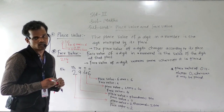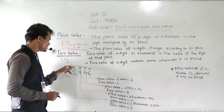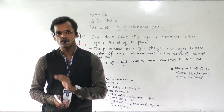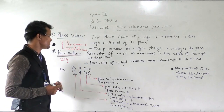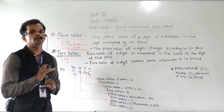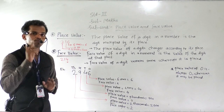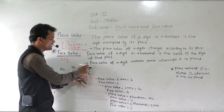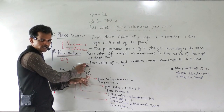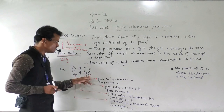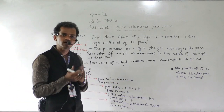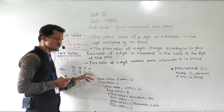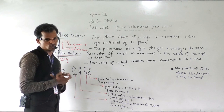Now we will see an example to understand both concepts. For the number 926, we will find the place value and face value of each digit. In this number 6 comes at the ones place, so place value is the digit multiplied by its place: 6 multiplied by 1 is equal to 6. And face value of this 6 remains the same — it is 6 only.